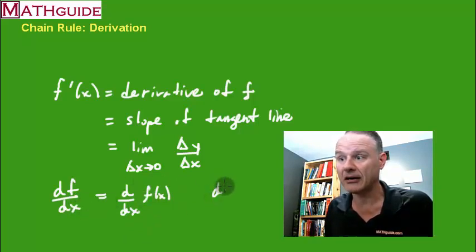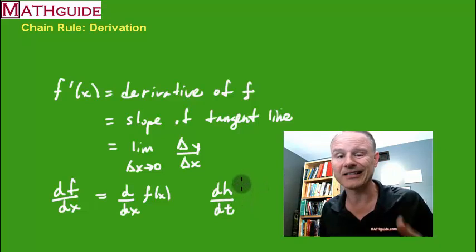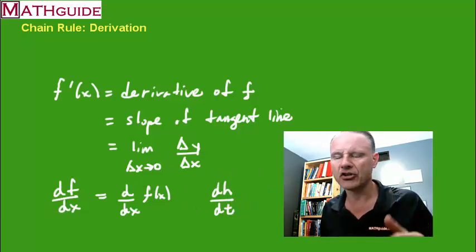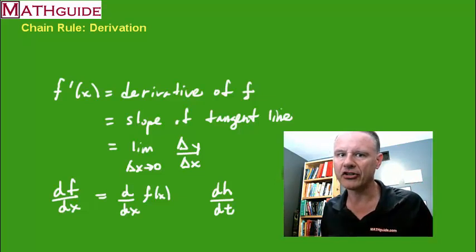Sometimes we even take other functions and find the derivatives with respect to other variables, like time. So these all mean the same thing. It's slope of the tangent line, but the notation looks a little strange. You should understand that before you jump into the chain rule.